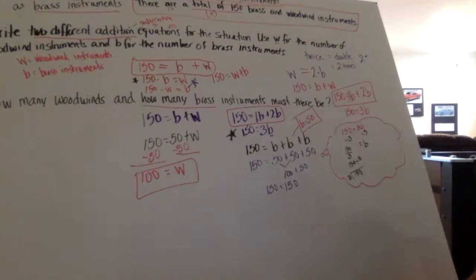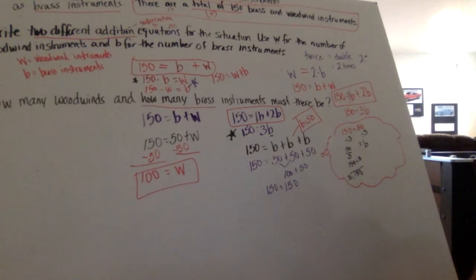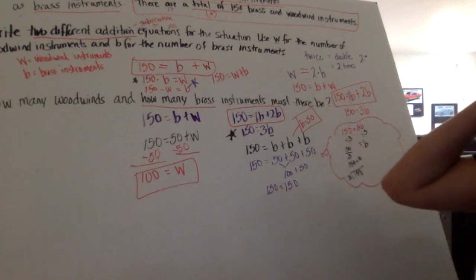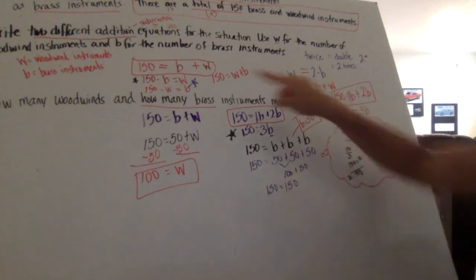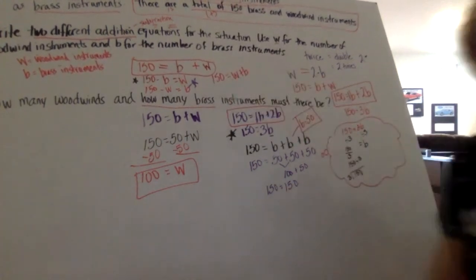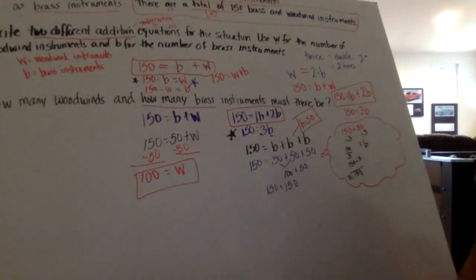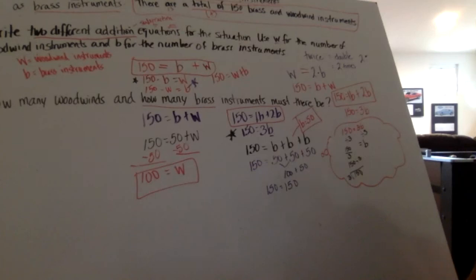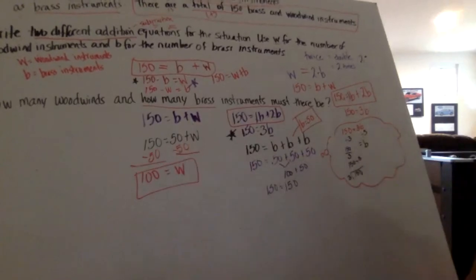And if you had a third variable, you'd need a third equation — another independent relationship. Just switching the order, like writing w + b instead of b + w, doesn't give you any new information. That just gives you a whole function table of answers — 1 + 149, 2 + 148, 3 + 147 — lots of answers. You'd need that additional relationship to pin down the unique solution.